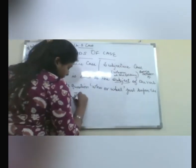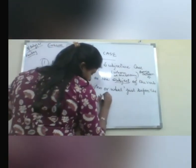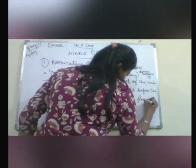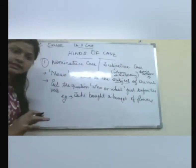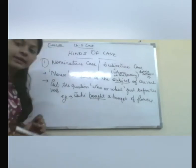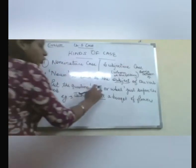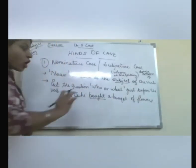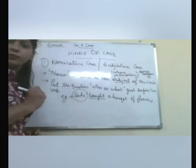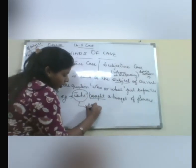For example: 'Juhi brought a bouquet of flowers.' What is the verb? The verb is 'brought'. Now put the question — who brought a bouquet of flowers? You are getting the answer as 'Juhi'. So Juhi is in the nominative case.